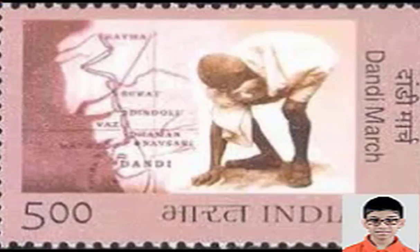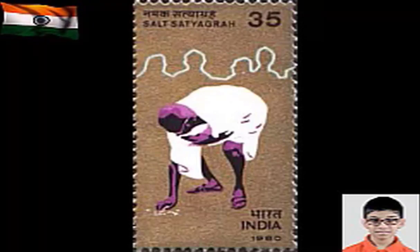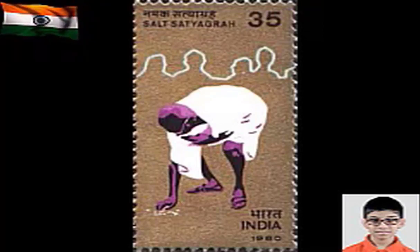Mahatma Gandhi began a march from Sabarmati Ashram to the coastal village of Dandi on 12th March 1930. On 6th April, Mahatma Gandhi with his 50,000 odd followers broke the salt law by generating salt from seawater, thus disobeying the tax payment. This resulted in the Gandhi-Irwin Pact, which ended the tyrannical salt laws. Gandhiji participated in the second Round Table Conference in London.